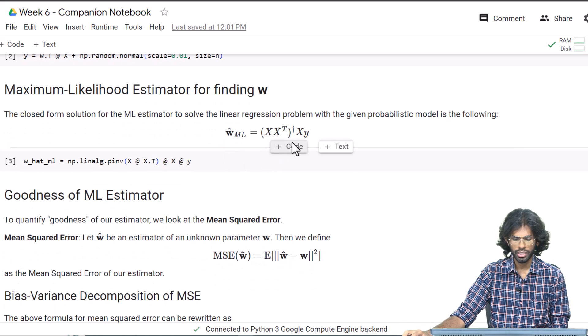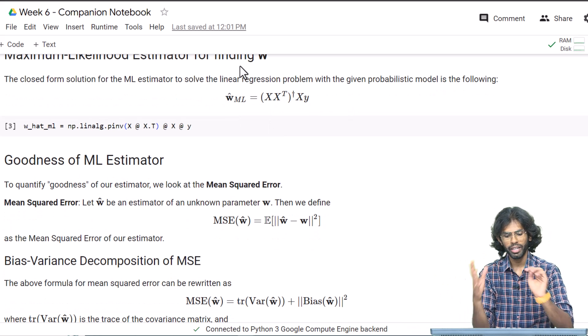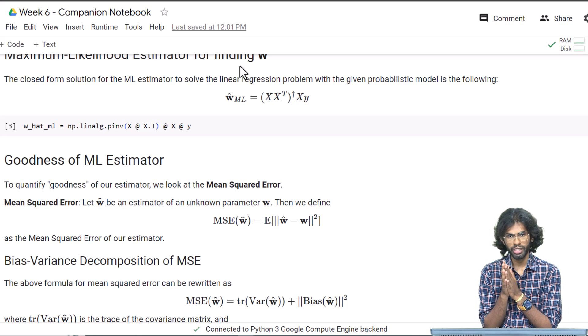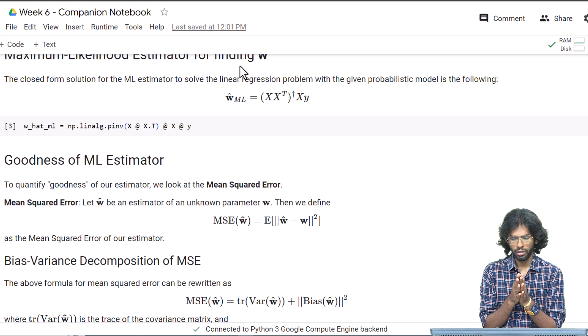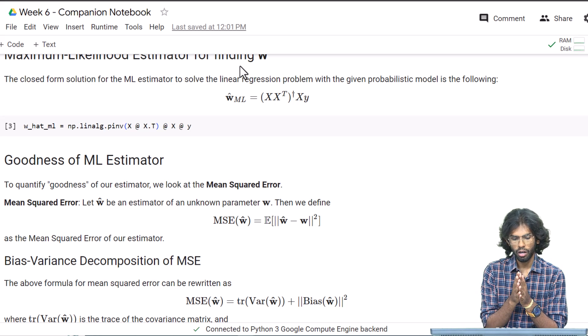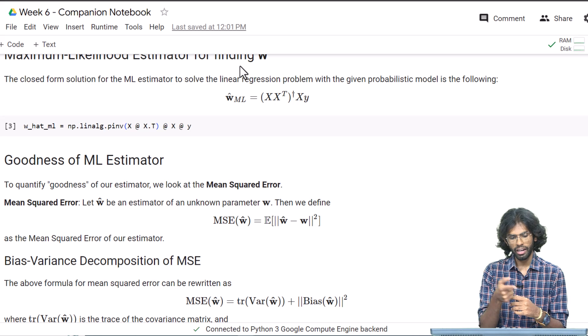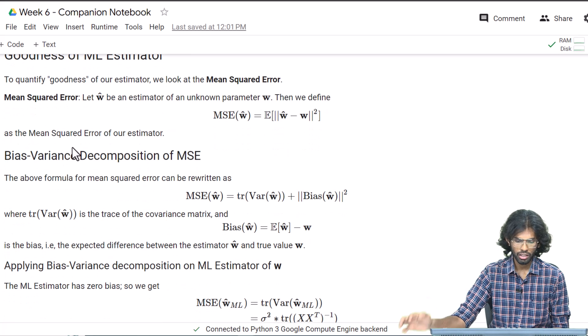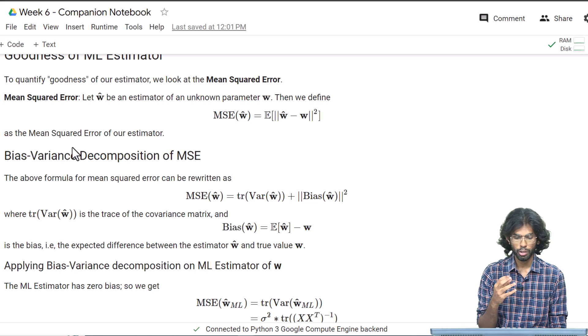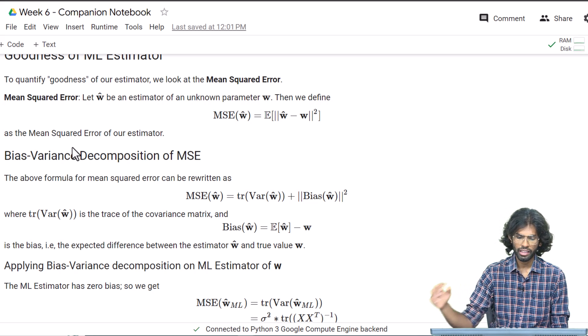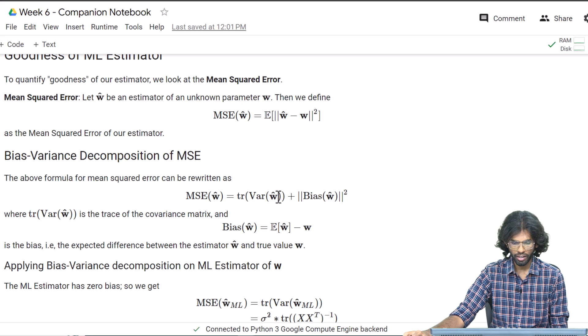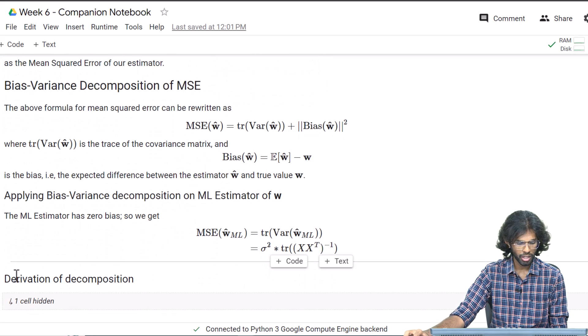Now we want to make this better. To investigate the goodness of this estimator, we will give it a metric: the mean squared error. The mean squared error basically measures the squared L2 norm of the deviation between the true value w and the estimator. This formula can be decomposed in terms of the bias and variance of the estimator itself. The MSE can be written as the trace of the covariance matrix of our estimator plus the norm squared of the bias.